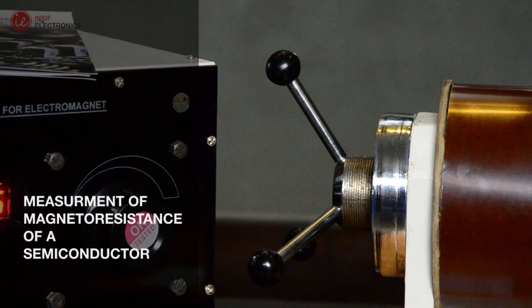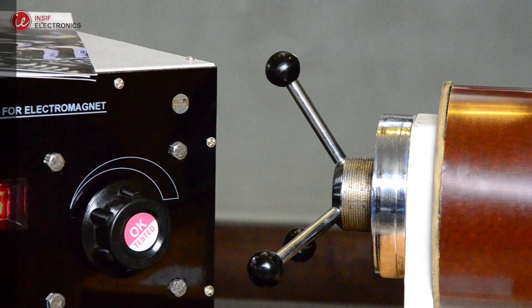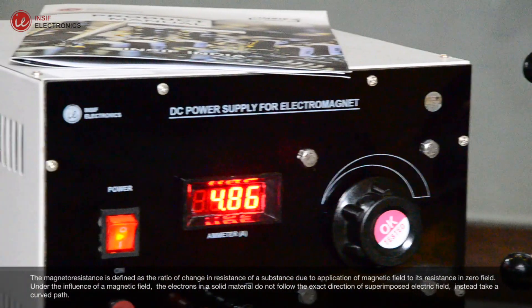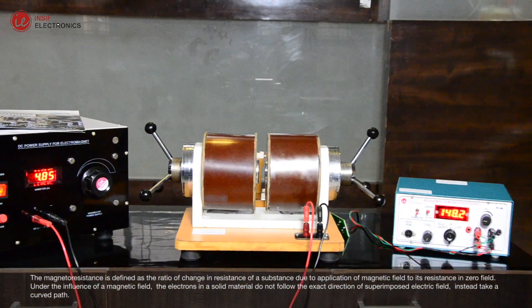Measurement of magnetoresistance of a semiconductor. The magnetoresistance is defined as the ratio of change in resistance of a substance due to application of magnetic field to its resistance in zero field.